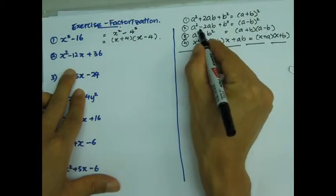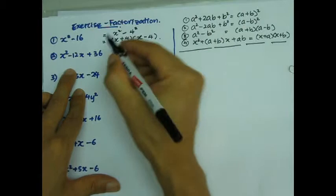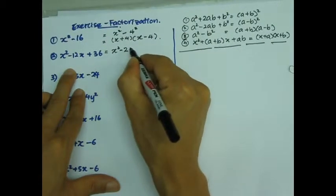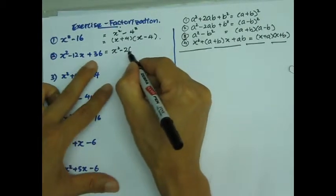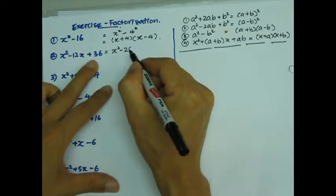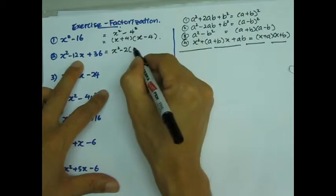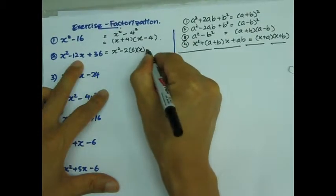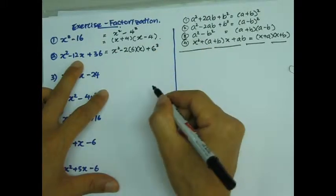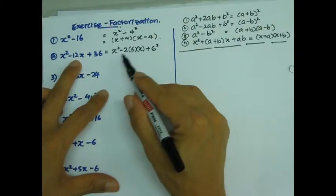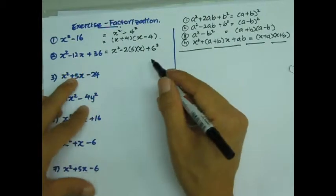I need to have a coefficient 2 there. So let's try that: x squared minus 2. And then I need to have 2 times something give me 6, and then multiply together give me 36. Is that possible? How about 6 and x, and then plus 6 squared? 6 squared is 36, 2 times 6 is 12. That will work. So basically I'm done.